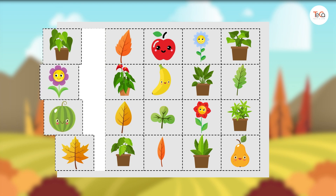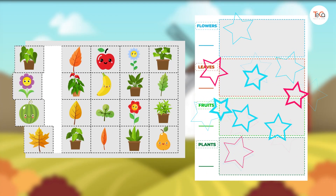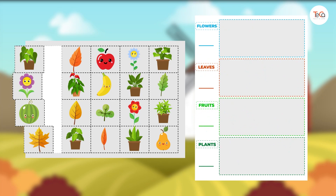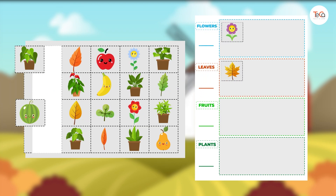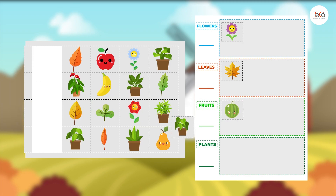Now with this worksheet, sort the items into four groups: a flower group, a leaf group, a fruit group, and a plant group. Take your time to do it.